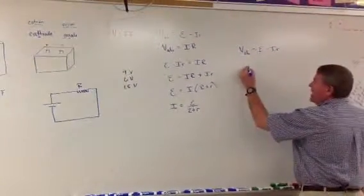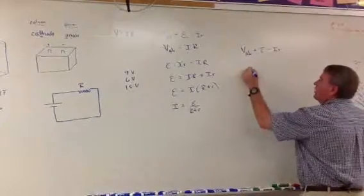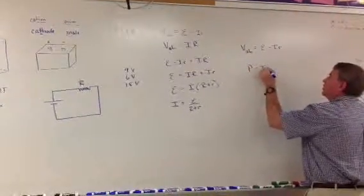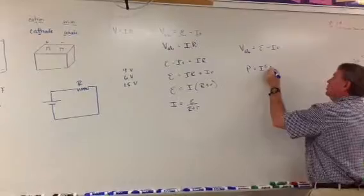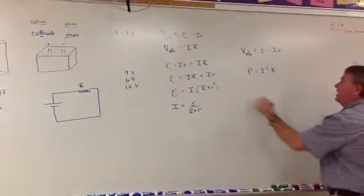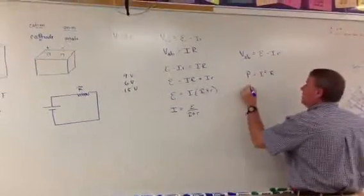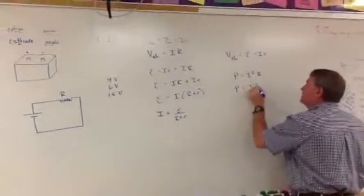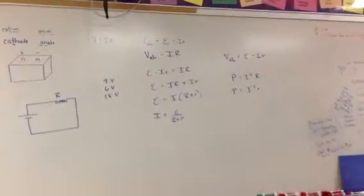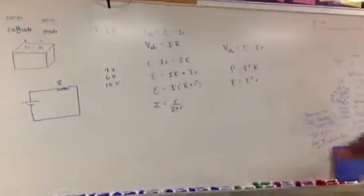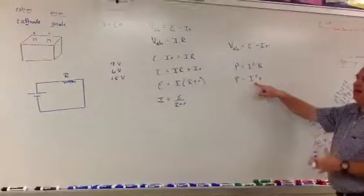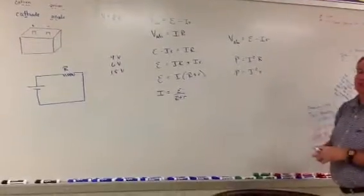After that, you can calculate the power dissipated across the large resistor — power equals I squared R. And then you can calculate the power dissipated across the internal resistance, which is the power being lost due to the internal resistance of the battery.